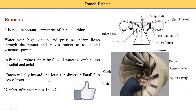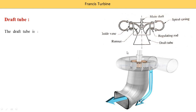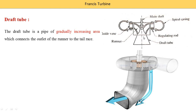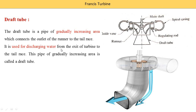The last part is the draft tube. The draft tube is installed at the outlet of the turbine. It is a pipe of gradually increasing area that connects the outlet of the runner to the tail race. It is used for discharging the water from the axis of the turbine to the tail race. This pipe of gradually increasing area is called the draft tube. Thank you for watching this video.